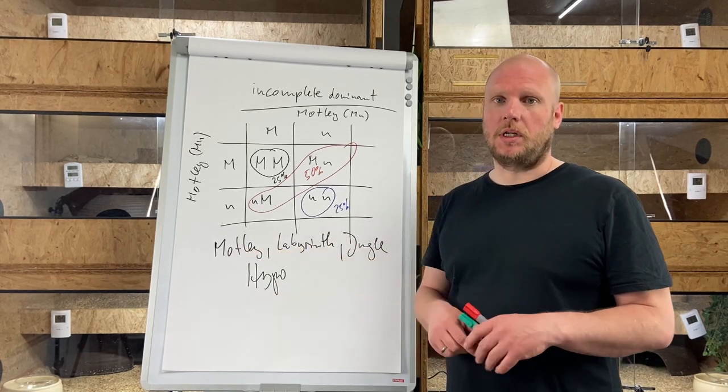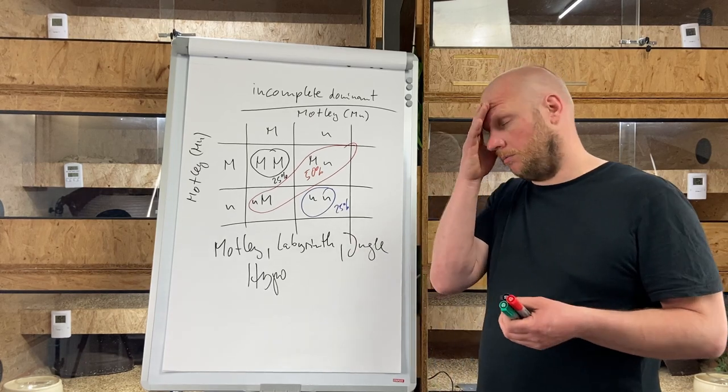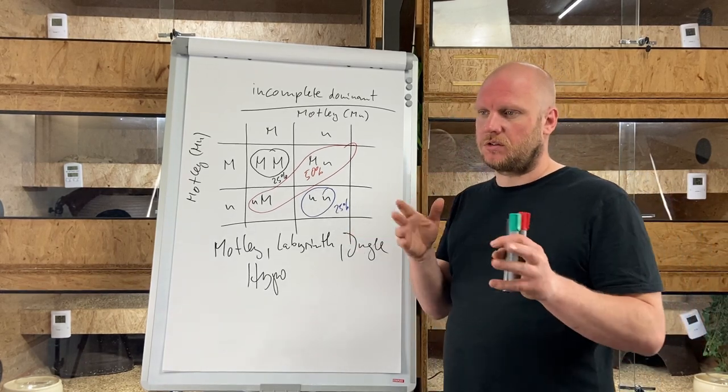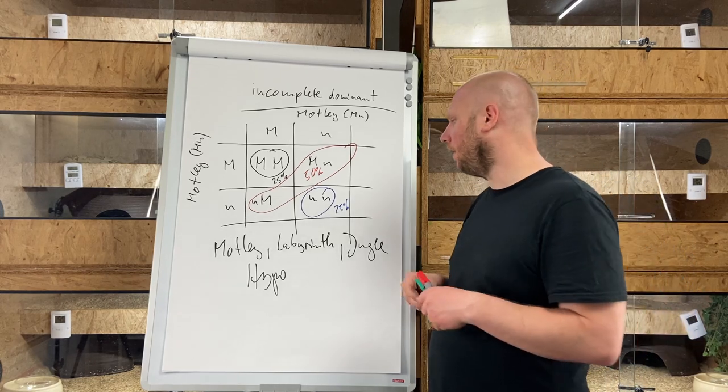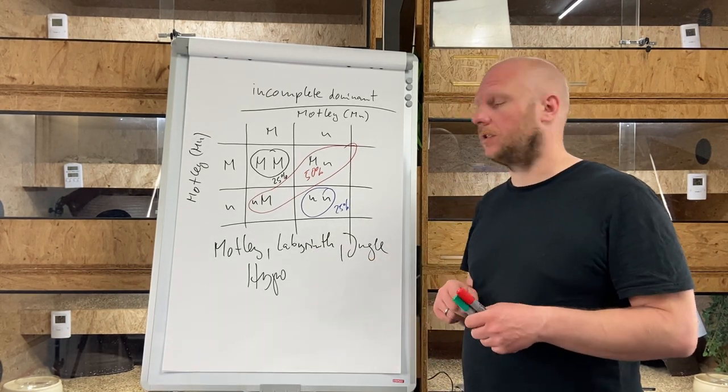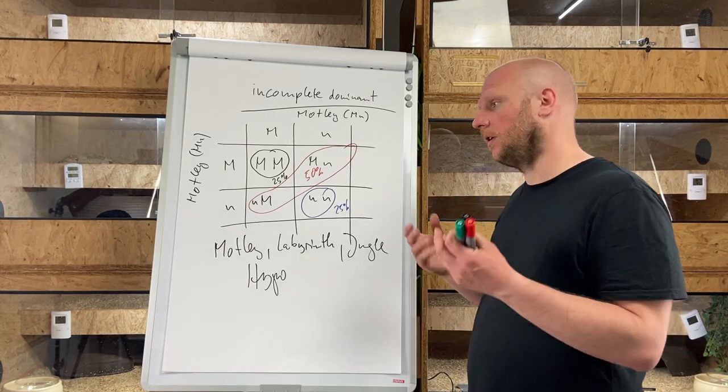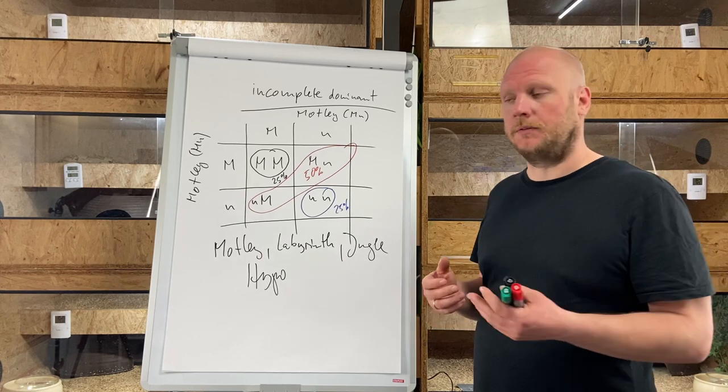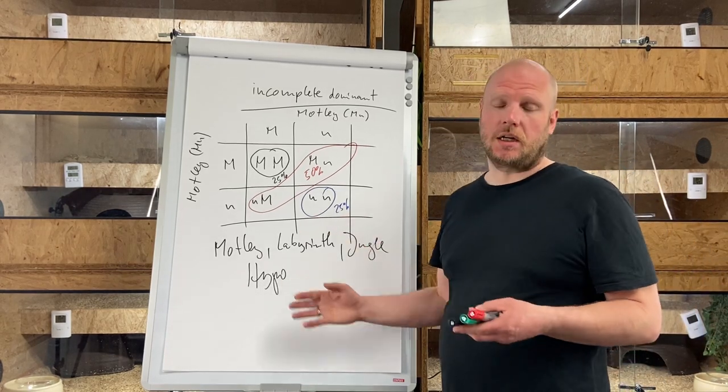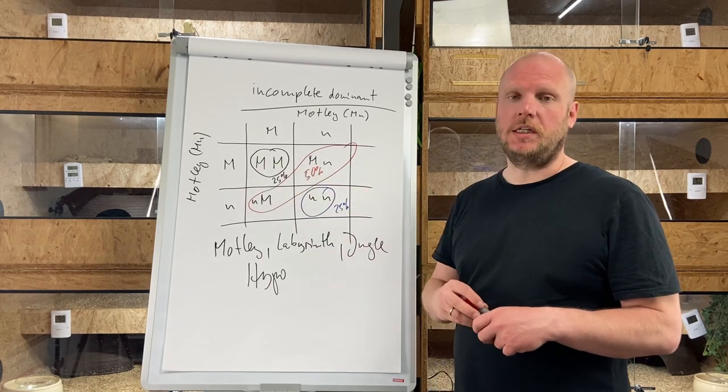For example, like super motley, like patternless in a black and sort of grayish color, labyrinth, the crystal boas, you can clearly identify them just by the look. Super jungle or super hypo, it's all the same. You can see if it's a homozygous animal or a heterozygous animal.